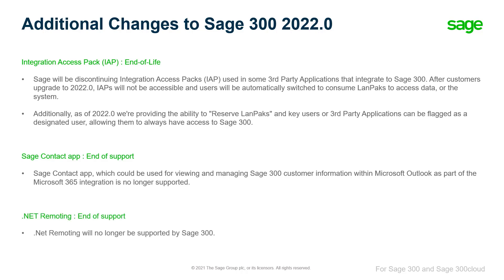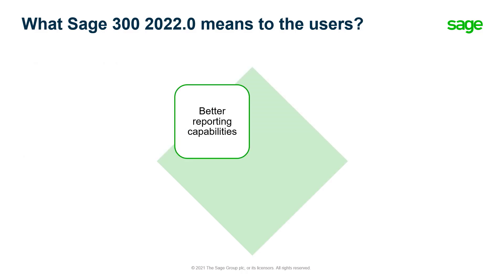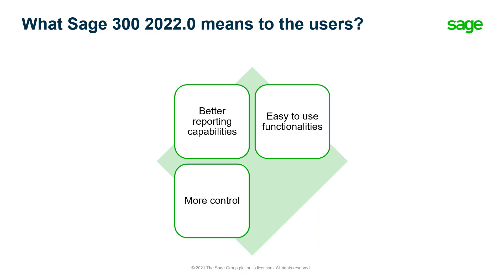Lastly, .NET Remoting will not be supported with the 2022.0 release. With the Sage 300 2022.0 release, we present our users with enhanced reporting capabilities and easy-to-use functionalities such as the redesigned Finder. With updates such as 64-bit Financial Reporter and the ability to reserve Landpacks, we provide users, specifically controllers, additional hold on their projects.